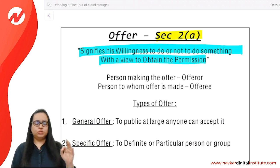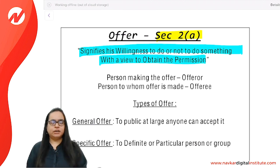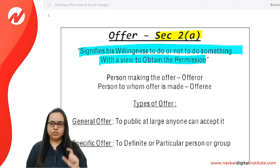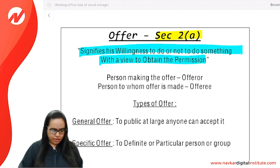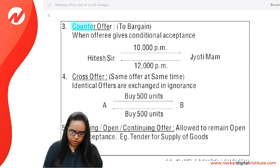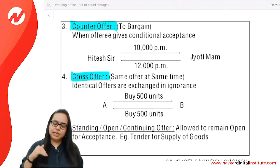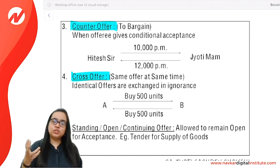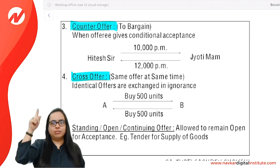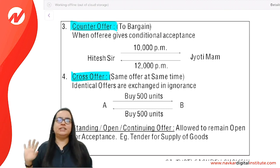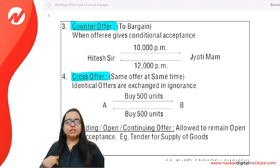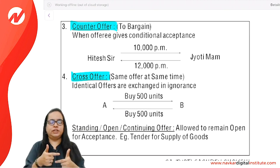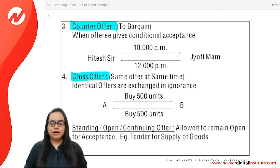Many students ask whether to write definitions word for word. I advise that where there are definitions, you can write them word for word. Types of offer — important: counter offer and cross offer. Counter offer: A offers B at 10,000, and B comes back with 12,000. B's response is a counter offer. A counter offer cancels the original offer.